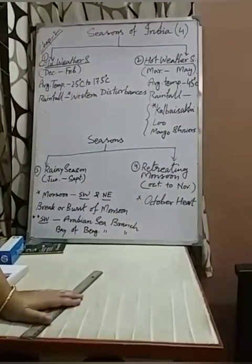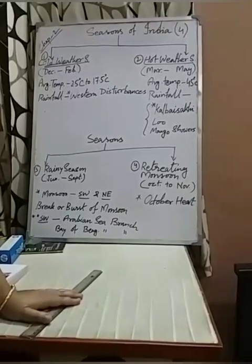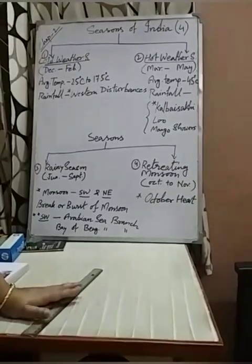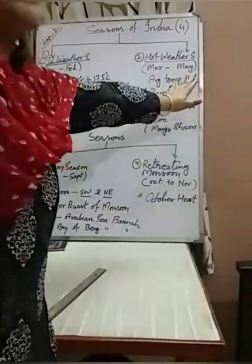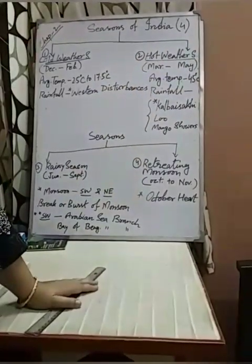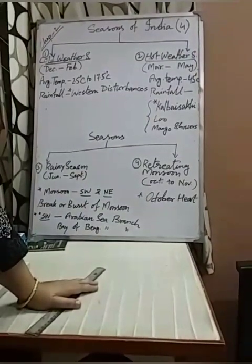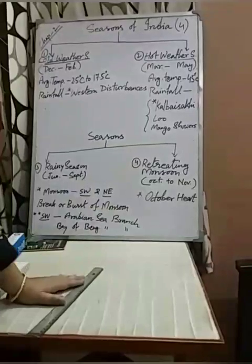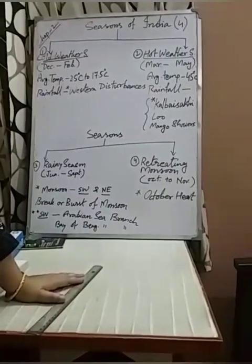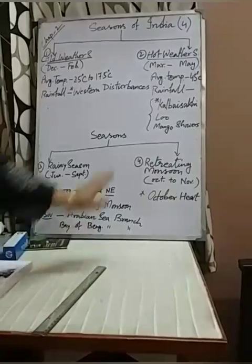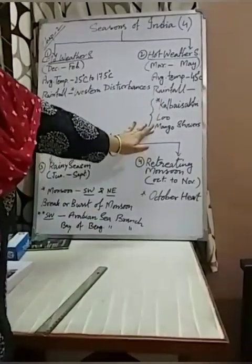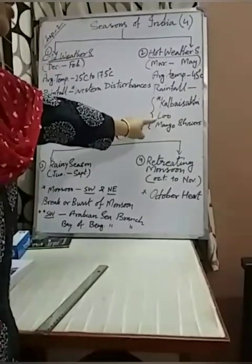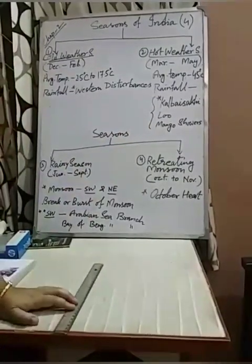During this time, low pressure develops over the land because of the high temperature — temperature and air pressure have an inverse relation. Some parts of India get rain during this hot weather season due to local winds. Three important local winds are: Kalboishakhi, Loo, and Mango showers.